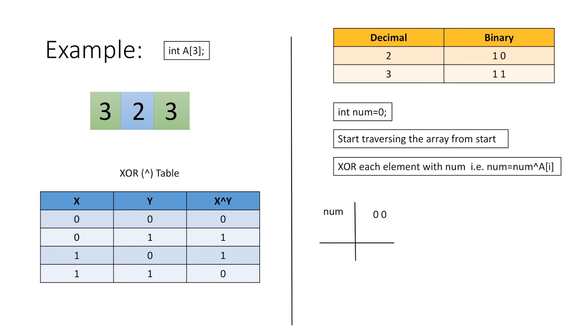Firstly we take our variable num which is initially 0, and then we take the first element in our array which is 3 and is represented as 11 in binary. Then we start performing the XOR operations on the corresponding bits starting from right and we store the result in num.